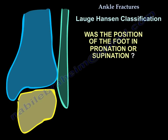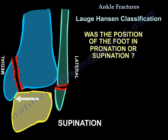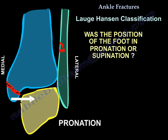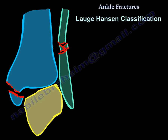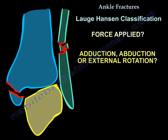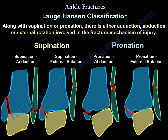The Lauge-Hansen classification depends on two things: the position of the foot — was it pronated or supinated? — and the force that was applied: adduction, abduction, or external rotation. Because of these two components — position of the foot and force applied — we get four types in the Lauge-Hansen classification.